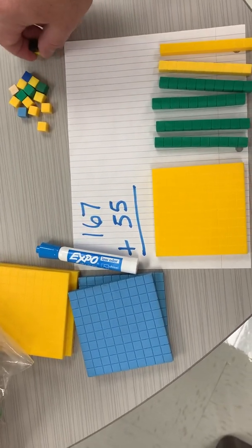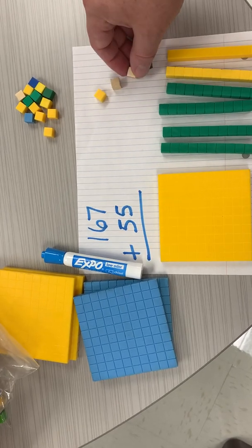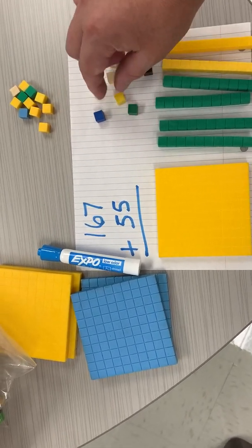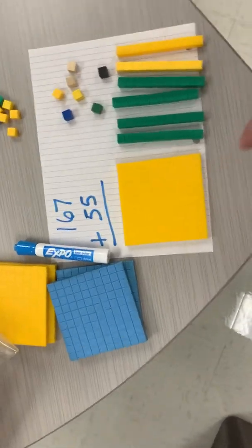And then I need seven more, so I'm gonna get my ones and I'm gonna count out 1, 2, 3, 4, 5, 6, 7. All right, so there I have my 160 and 7.